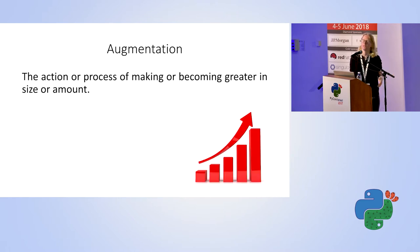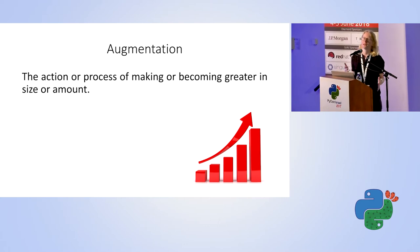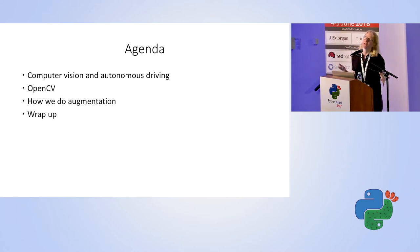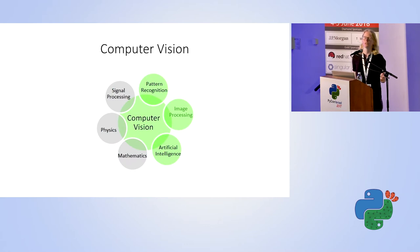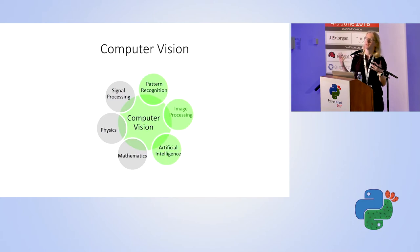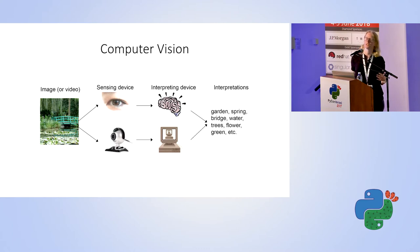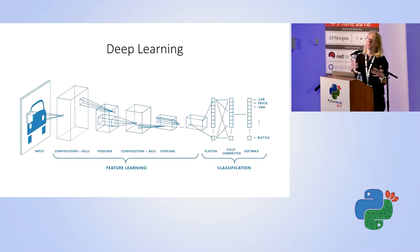First, what is augmentation? Augmentation is the process of making something larger in size or amount. The agenda for today is first to talk about computer vision and autonomous driving, then we'll talk about the OpenCV library, next we'll present our augmentation tool, and in the end we'll conclude. Computer vision is an interdisciplinary field that incorporates knowledge from math and physics, signal processing, and machine learning. The goal is to mimic how our eyes and brain work and incorporate visual knowledge and visual data such as images and videos. The area has undergone a major revolution in the last few years with deep learning technology.